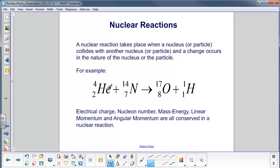we have here a helium nucleus striking a nitrogen nucleus, then on the other side you wind up with oxygen and a hydrogen nucleus or a proton. In nuclear reactions, electrical charge, nucleon number, mass energy, linear momentum, and angular momentum are all conserved in the reaction.